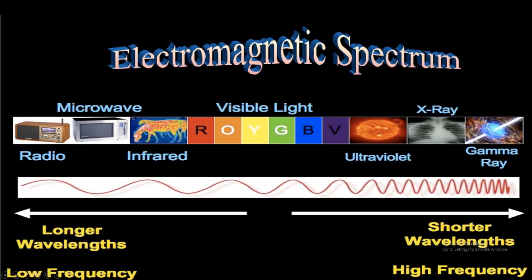If we take a look at this electromagnetic spectrum diagram, it reinforces the concepts we just talked about. Radio, microwave, infrared, and visible light waves have a longer wavelength and a low frequency, which means they're carrying less energy. But as we move across the electromagnetic spectrum, the wavelengths get shorter and shorter and the frequency gets higher, which means the amount of energy carried is getting higher as well — that includes ultraviolet, x-rays, and gamma rays.